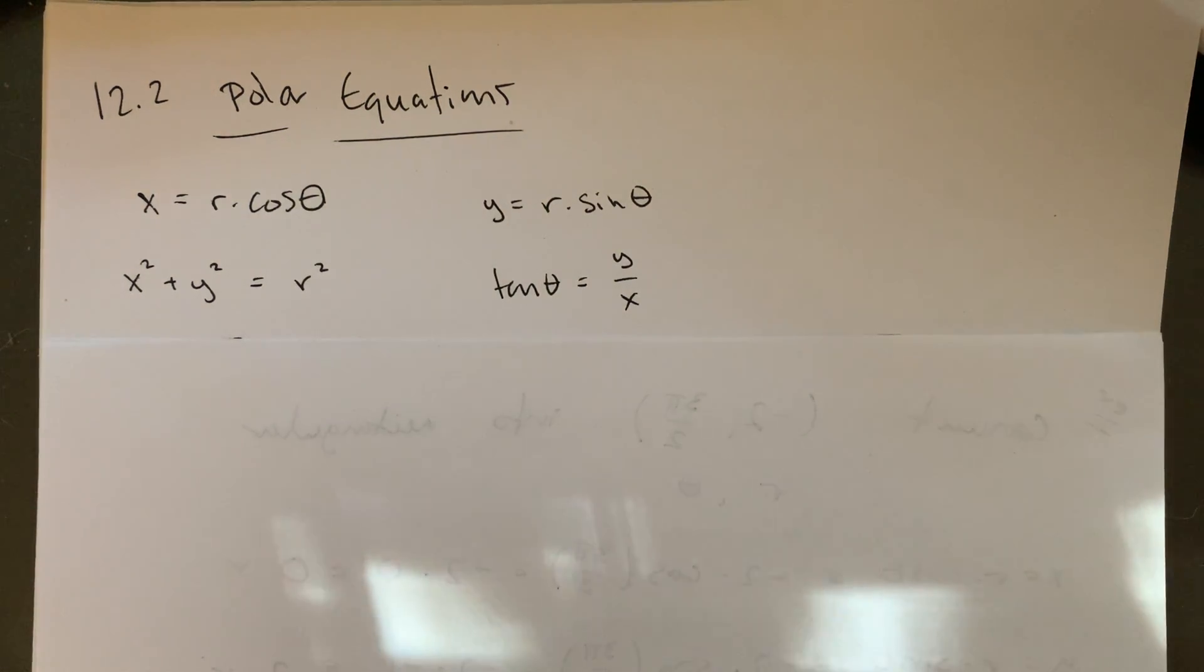We can also kind of use them to convert from a polar equation into a rectangular equation, or in theory, kind of vice versa. A polar equation is just going to be an equation where your variables are r and theta. It's an equation where you're setting it up with the radius and the angle versus the xy coordinates.